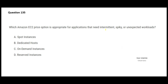Now let's jump into this question. There is an application that needs intermittent, spiky, and unexpected workloads. 'Unexpected' means you cannot plan — if you cannot plan, you cannot use dedicated hosts or reserved instances, because those require predictable workloads. So options B and D are out of the question, as they need expected, predictable workloads.